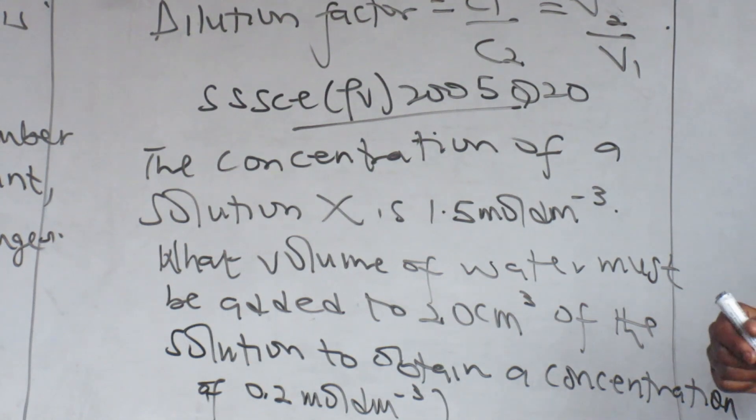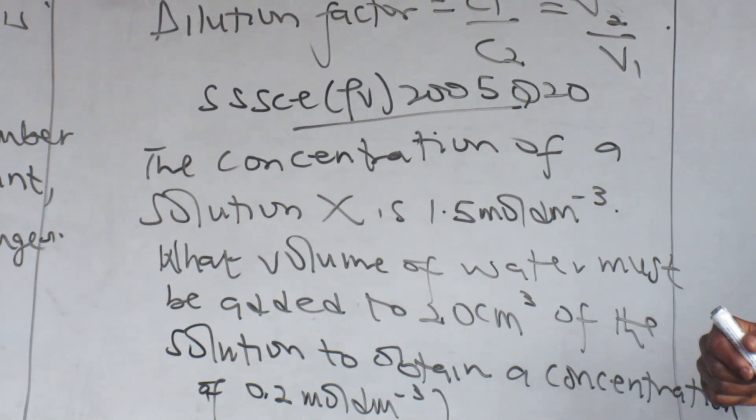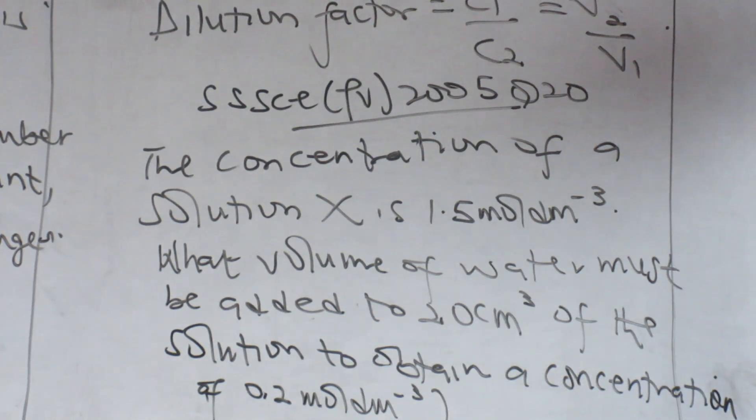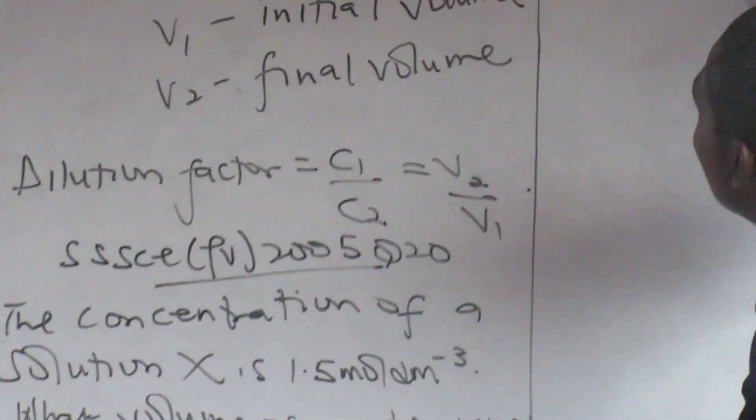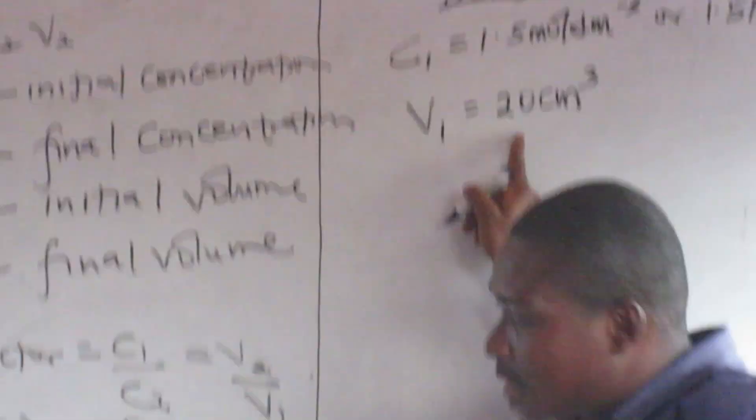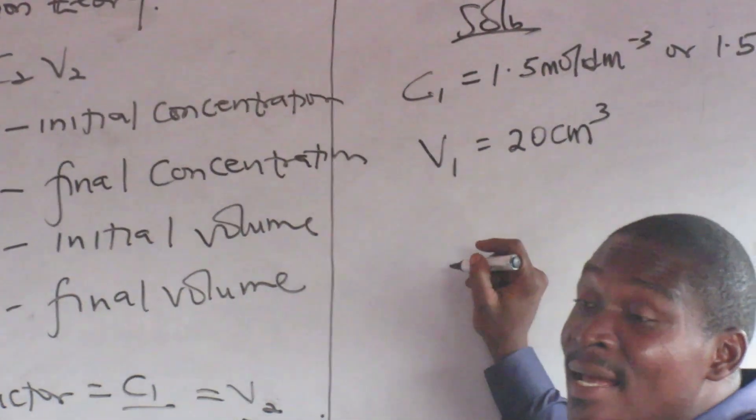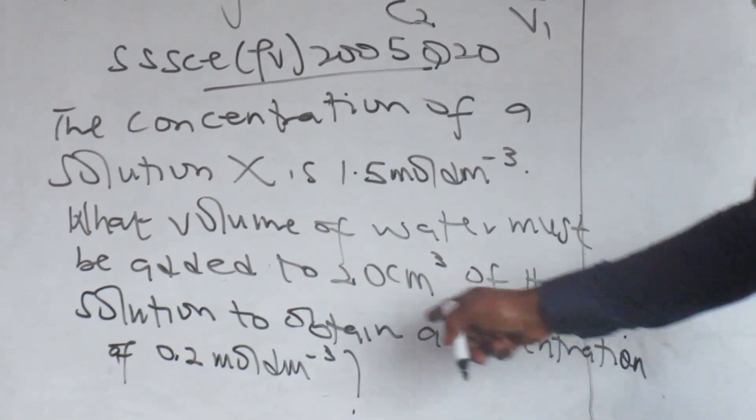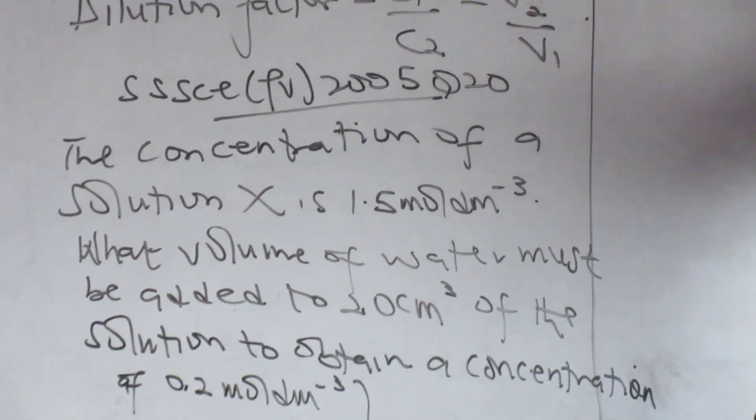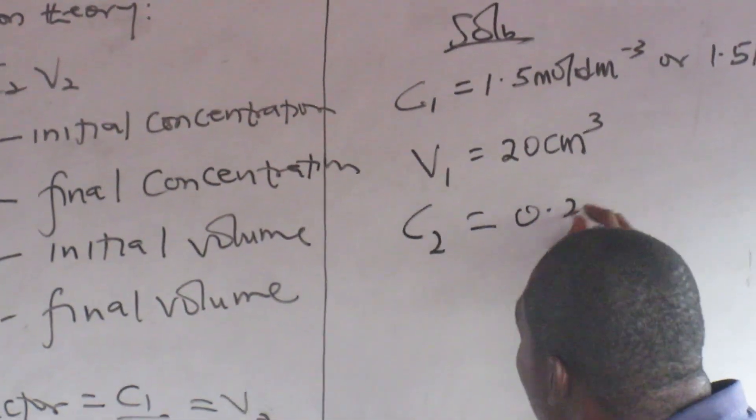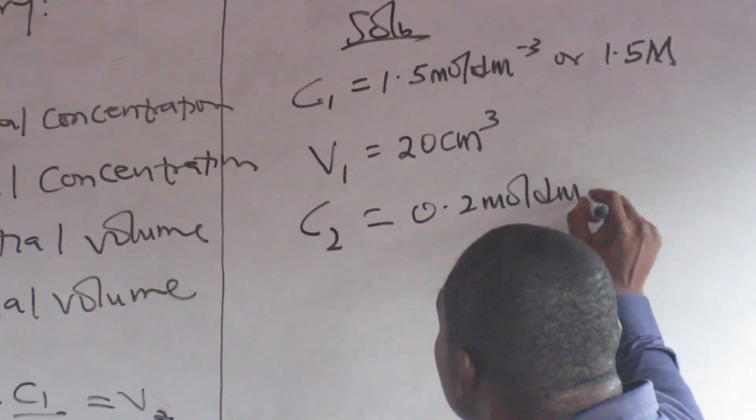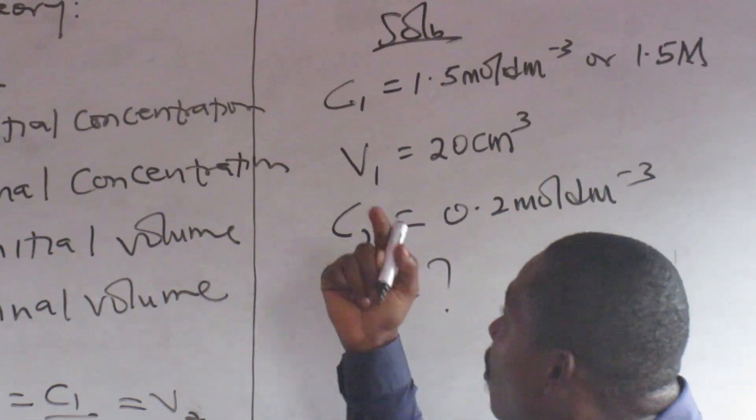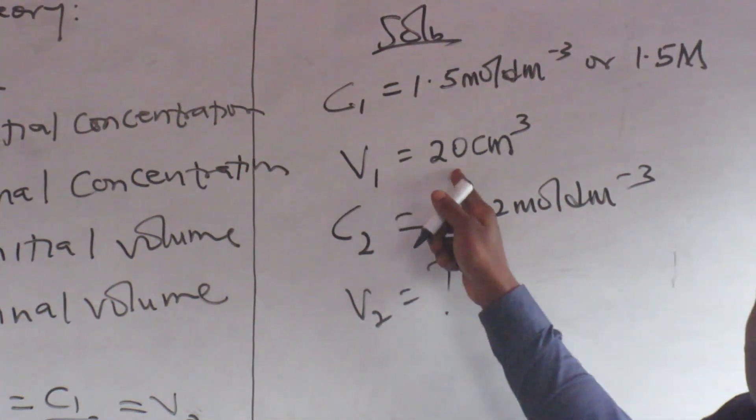During dilution, the number of moles remains constant. Only the volume changes. If you have seven bits of poison in this bottle and you add water plenty, it gets full to this point. The seven bits of poison are still seven, they will not change to eighteen. So the number of moles remains constant. Only the volume will change.